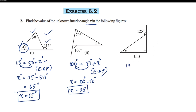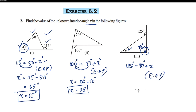The exterior angle is 125°. One of the interior opposite angles is a right angle, which is 90°. Using the exterior angle property, x equals 125° minus 90°, which is 35°.